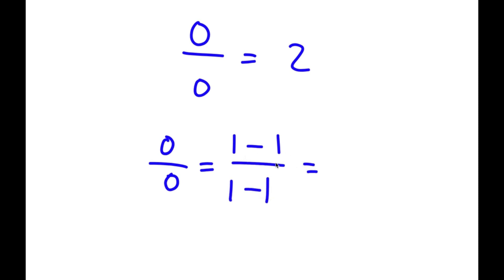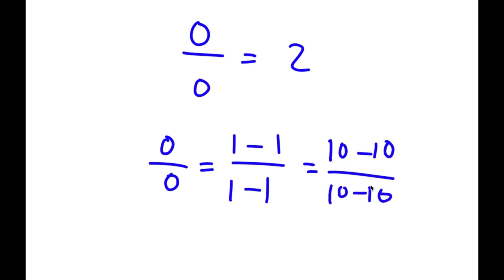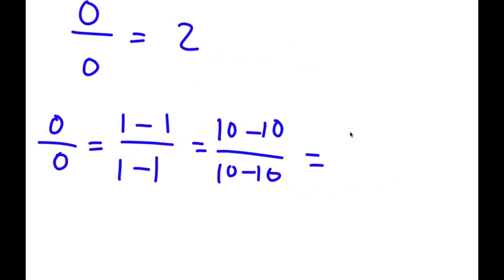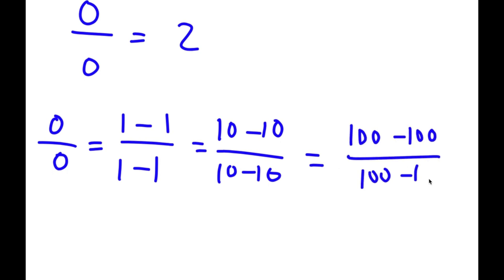And 1 minus 1 is the same thing as 10 minus 10. All of this is equal to 0 — 1 minus 1 is 0, 10 minus 10 is 0. And 10 minus 10 is the same thing as 100 minus 100. So I have 100 minus 100 over 100 minus 100.